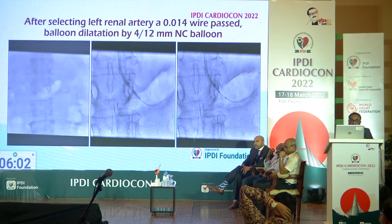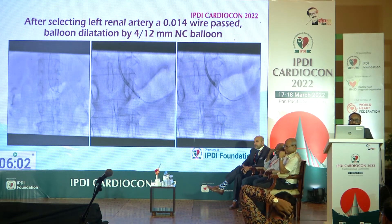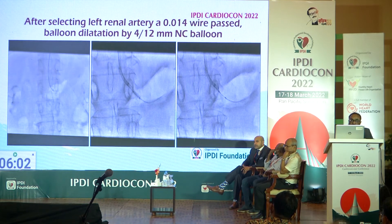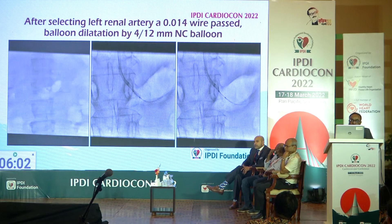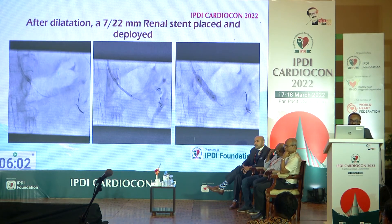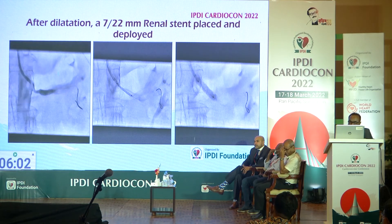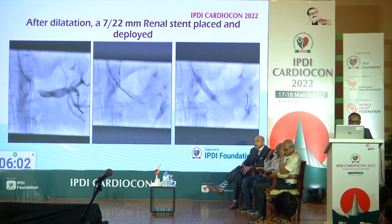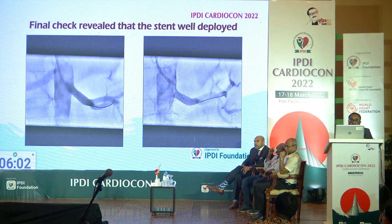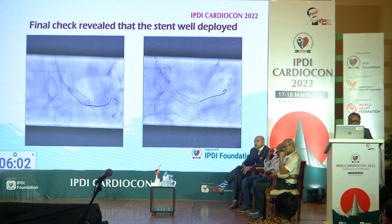We approached via the radial route. Selecting the left renal artery, we passed a coronary wire and performed balloon dilatation with a 4 by 12 mm NC balloon. After dilatation, a 7 by 22 mm renal stent was placed across the lesion covering the ostia and deployed. Pulling the balloon back, we ensured adequate coverage of the ostia and also performed flaring. Final check revealed the stent was well deployed with a good result.